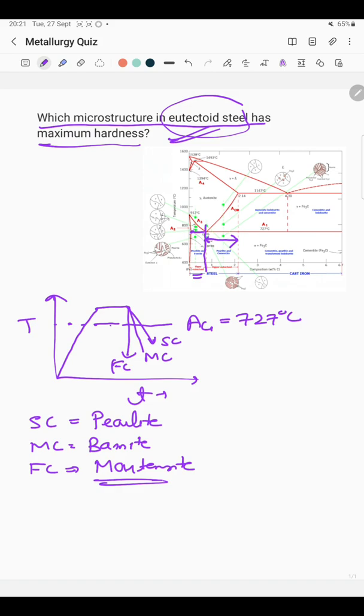So now let's see which is having the highest hardness. Martensite is having the highest hardness as compared to bainite, and bainite is having highest hardness as compared to pearlite. So the correct answer here is martensite. Martensite microstructure is having higher hardness as compared to other microstructures.